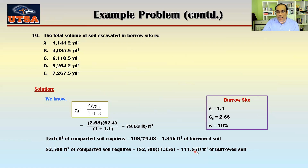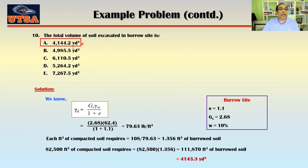We are bringing 1.356 times 82,500 cubic feet of borrow soil and then compacting it to 82,500 cubic feet at the construction site. Converting to cubic yards, the answer is approximately 4,144.2 cubic yards. That concludes this video session. If you have any questions, please feel free to join the Wednesday session to discuss further. Thank you for watching.